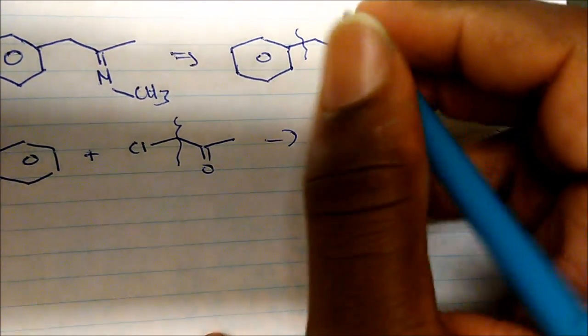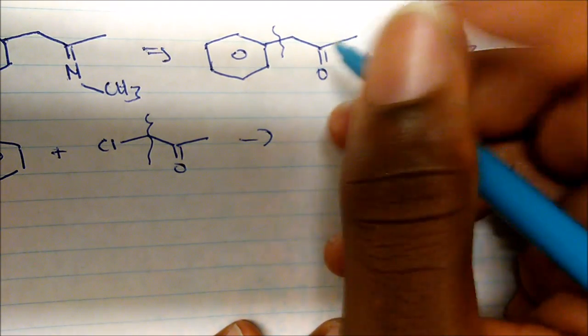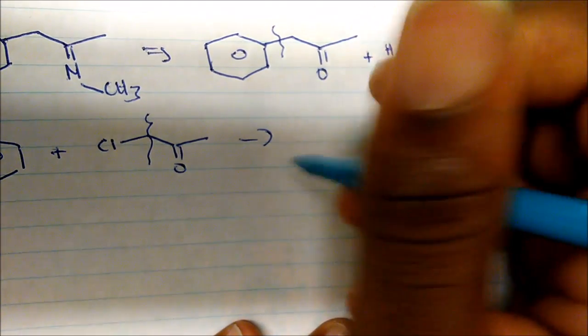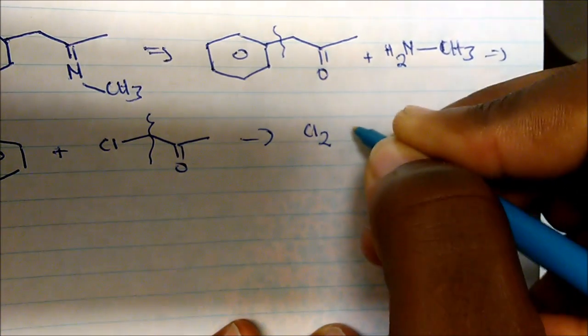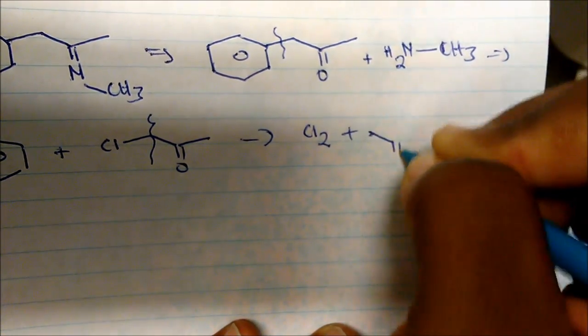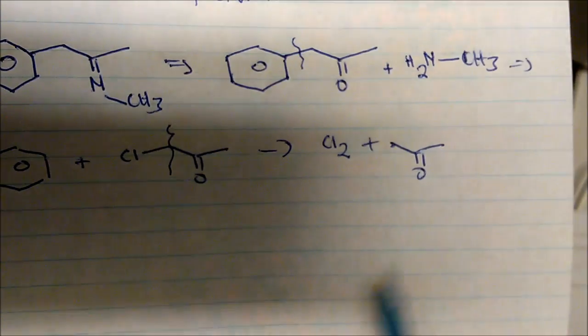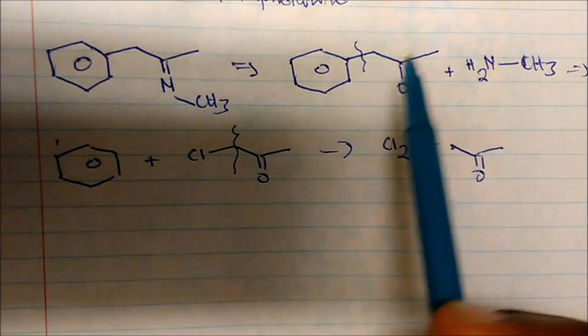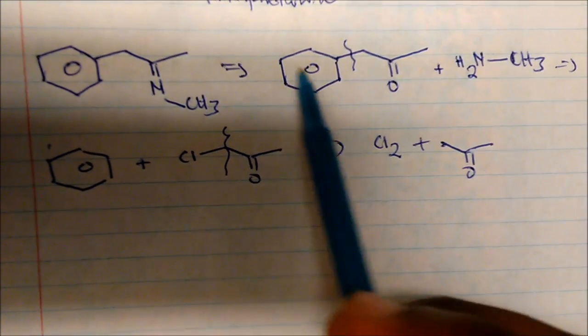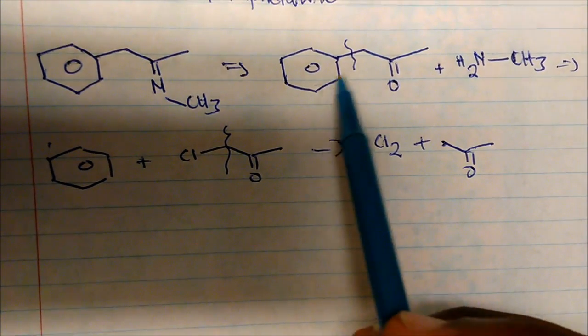This is Friedel-Crafts alkylation. And so I could use chlorine and acetone. I get the structure. And so I'm going to run through the synthesis. Now, I want to talk briefly about a little bit of these. So we know how to make this.